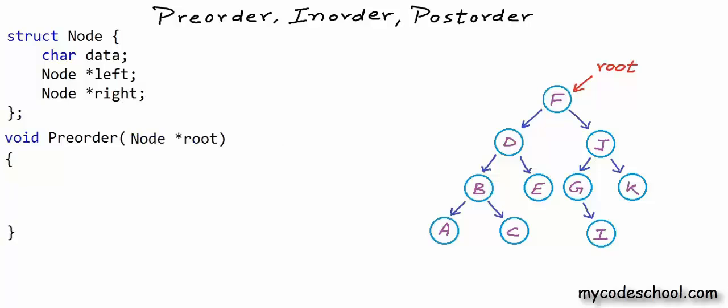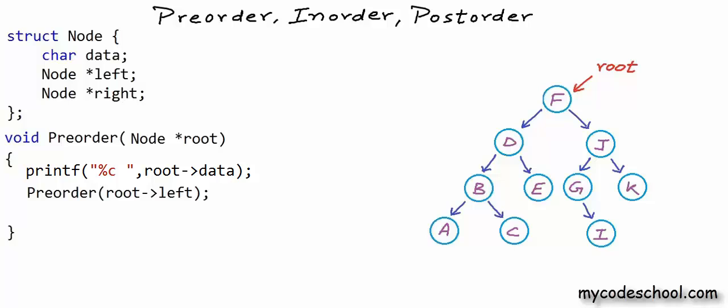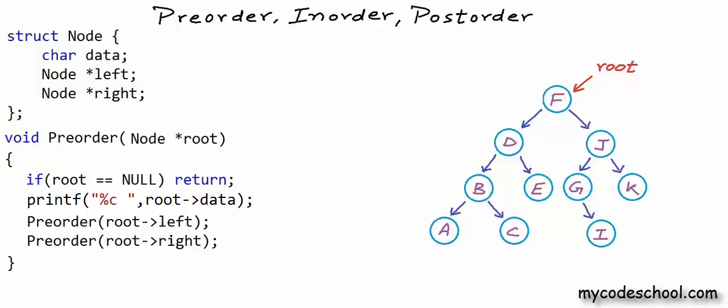In the pre-order function, I first visit or print the data in the root node. Then I make a recursive call to visit the left sub-tree, passing the address of the left child of the current root, because the left child is the root of the left sub-tree. Then another recursive call to visit the right sub-tree. We also need a base condition: if a tree or sub-tree is empty — if root is null — we return or exit. In C, make sure you write 'struct node' instead of just 'node'. This completes the pre-order function.